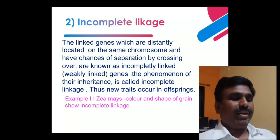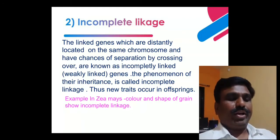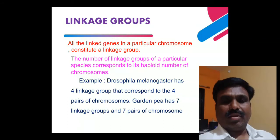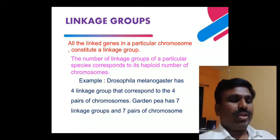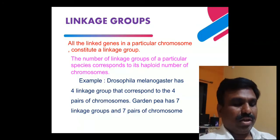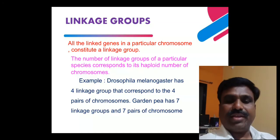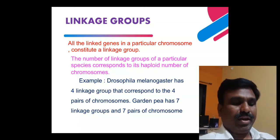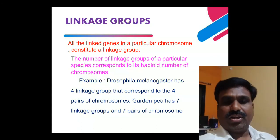The phenomenon is known as incomplete linkage. In incomplete linkage, new traits occur in the offspring. The best example is maize — in maize plants, color and shape of the grain show incomplete linkage.